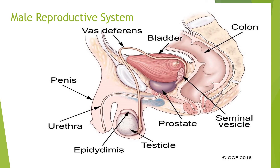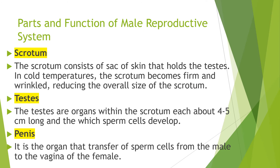This is a typical picture of a male reproductive system and its parts: testicle, scrotum, penis, vas deferens, prostate gland, seminal vesicle, and urethra. Now I'm going to discuss the parts and functions of the male reproductive system. First is the scrotum — it consists of a sack of skin that holds the testes. In cold temperatures, the scrotum becomes firm and wrinkled, reducing the overall size of the scrotum.